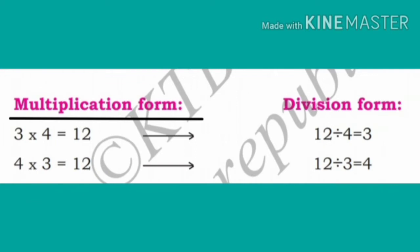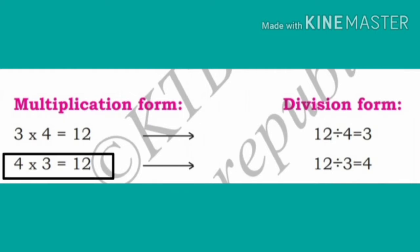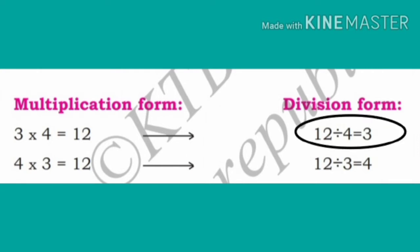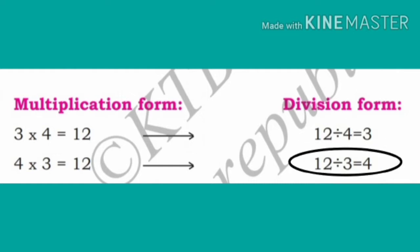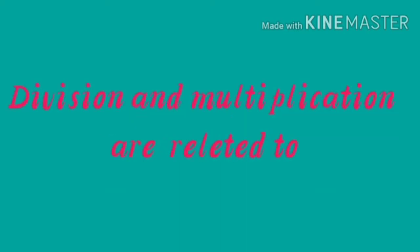Observe the multiplication form and division form. 3 into 4 is equal to 12, and 4 into 3 is equal to 12 — this is multiplication form. Now, 12 divided by 4 is equal to 3, and 12 divided by 3 is equal to 4. So every multiplication form has a corresponding division form. Therefore, division and multiplication are related to one another.